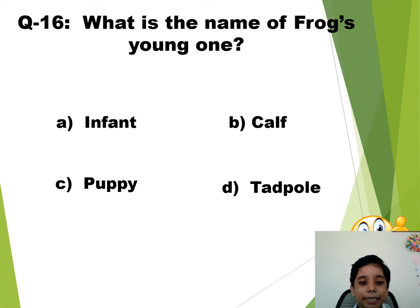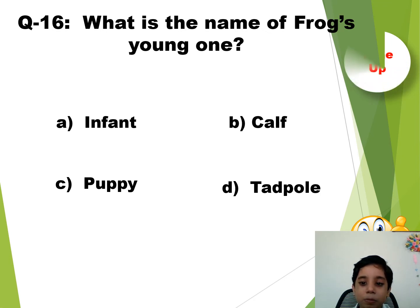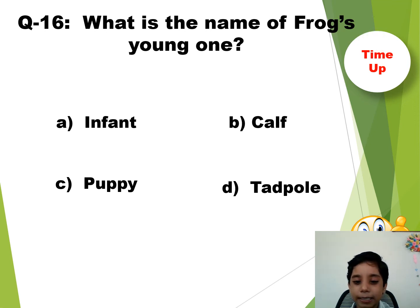Question number 16. What is the name of the frog's young one? The time starts now. Time up. So the answer is D — Tadpole.